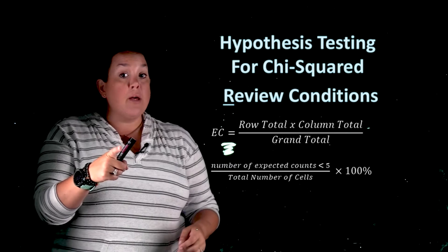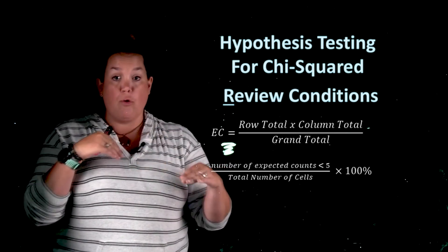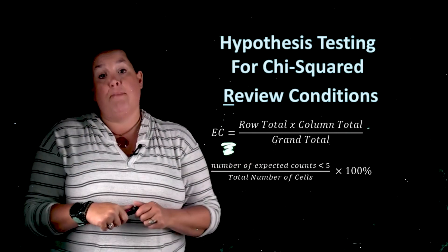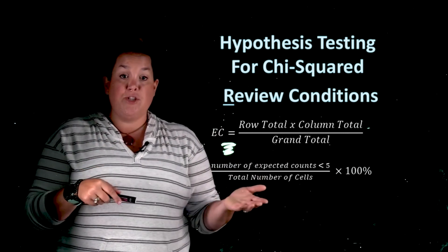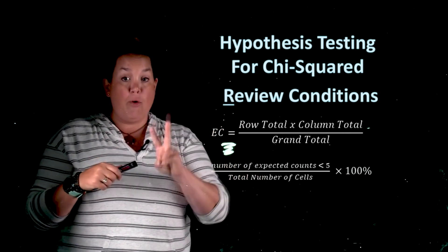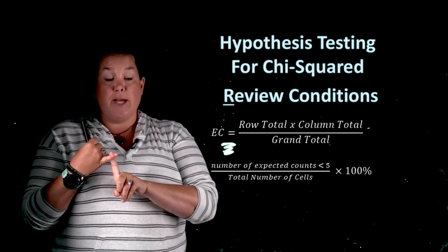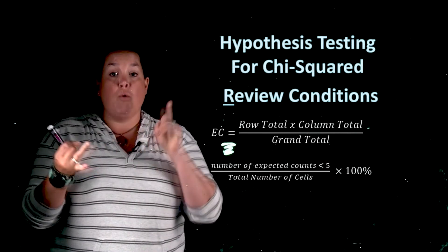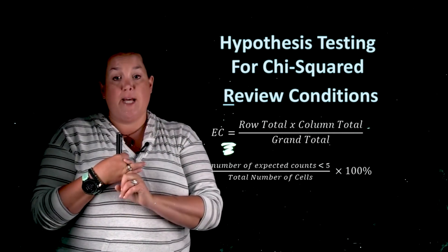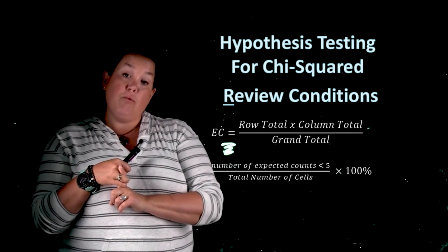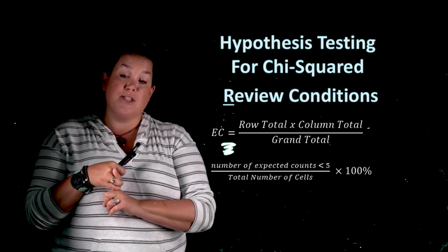Remember, you do not include the total row or total column in your count of cells. That's how you review conditions — both must be true: no expected count less than one, and less than twenty percent of cells with an expected count less than five. In the next video we'll talk about executing calculations.